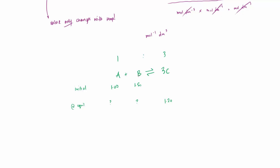Similarly, 0.4 moles of B would have reacted to produce 1.2 moles of C. So moles of A at equilibrium = 1 minus 0.4 = 0.6. Moles of B at equilibrium = 1.5 minus 0.4 = 1.1. Once you understand the ratios, these questions are really straightforward.